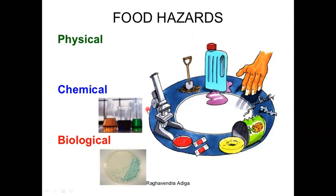Chemical hazards include chemical pesticides, hormones, fertilizers, cleaning chemicals, maintenance chemicals, agriculture chemicals, and coloring agents. Then biological hazards — biological hazards include microorganisms like bacteria, mold, and yeast. We have to identify which kind of hazard is present.